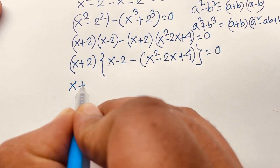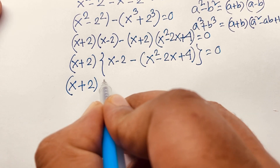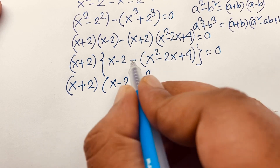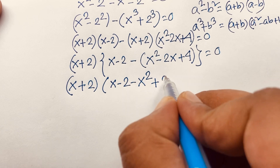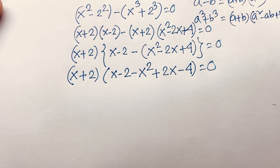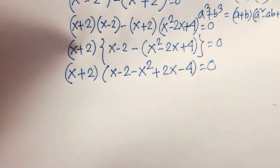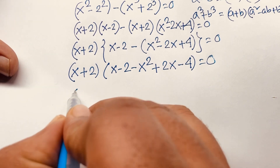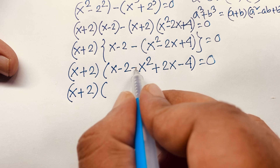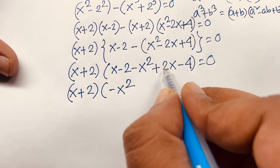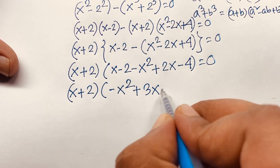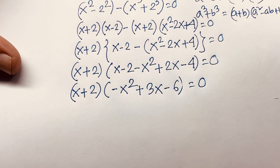Expanding inside the bracket: x minus 2 minus x squared plus 2x minus 4 equals 0. Combining like terms gives minus x squared plus 3x minus 6, so the equation becomes (x + 2)(−x squared + 3x − 6) equals 0.